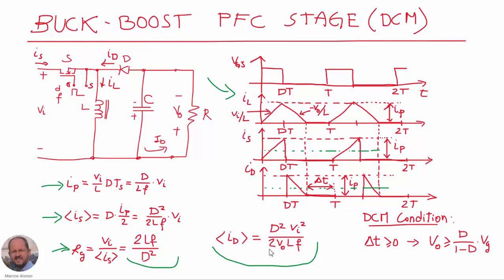Finally, we need to ensure that our converter is going to operate in discontinuous conduction mode within the whole line period. We need that the delta-t time interval be greater than zero, so the current through the inductor has to reach zero before the end of the period. If we calculate the value of delta-t and apply this condition, we will get this expression: in order to operate in discontinuous conduction mode we need the output voltage vo to be higher than d over (1 minus d) times the peak line voltage.